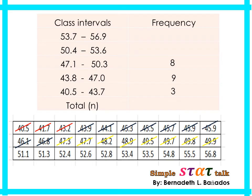For the interval 50.4 to 53.6, there are 1, 2, 3, 4, 5, 6, 7 — so 7 values for the fourth interval. Finally, for the last class interval, 53.7 to 56.9, there are 1, 2, 3 values.